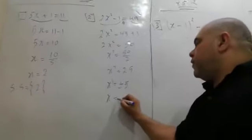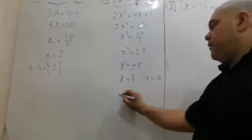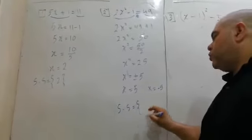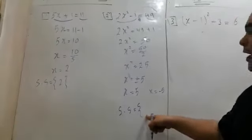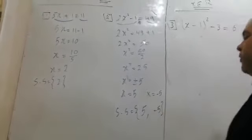So x equals positive or negative 5. Then x equals 5, then x equals negative 5. So solution set, you don't write positive or negative 5 inside the brackets. 5 and negative 5. There are two solutions.